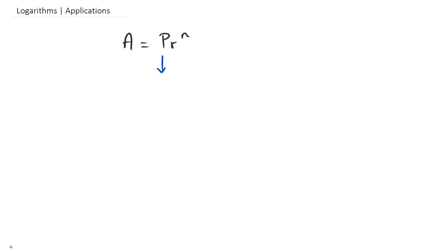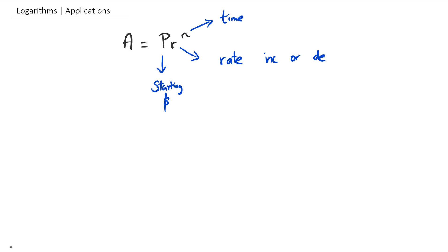Basically, imagine you're dealing with money. P is whatever you're starting with — your starting money. R is your rate, whether it's actually increasing or decreasing. N is sometimes written as T for time. And A is your final amount — the final dollar that you have. A couple of things that are really important to know: the increase or decrease.